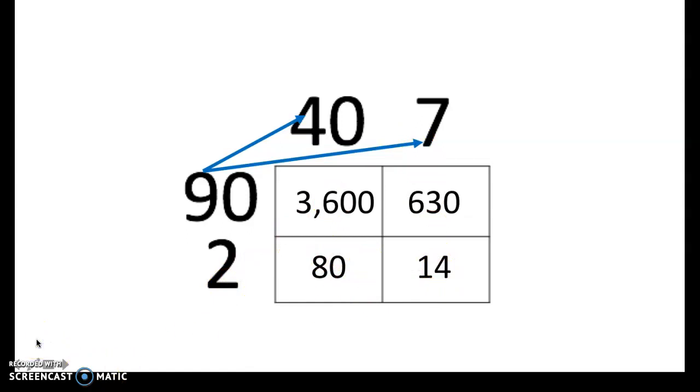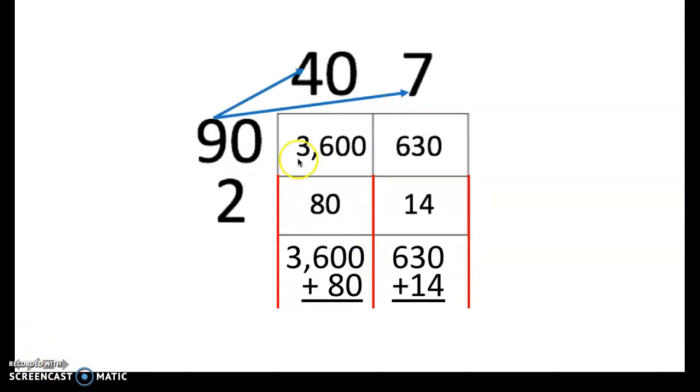Now this next step is absolutely key. What I recommend that our fifth graders do with their box is to extend the lines. And what we're going to do by extending these lines is to keep our work organized and to keep our partial products in their own little area before we add them all together up here. So in extending those lines, I know that I'm going to add together 3,600 plus 80. Notice though, how I lined up all of my place values.